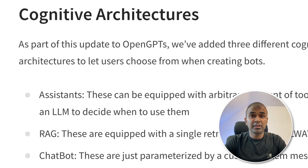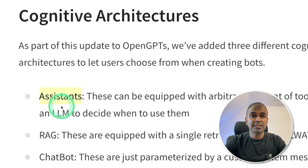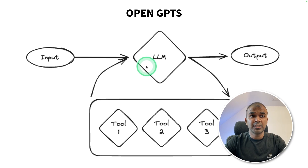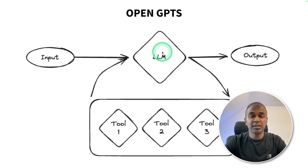Overall it provides three different features: first, creating assistants; then RAG; and then chatbot. If it is an assistant, the input is sent to the large language model. If it requires tools, it will be passed to the tools. The tools return the output back to the large language model and finally we get the output. It's the same as plugins in ChatGPT.